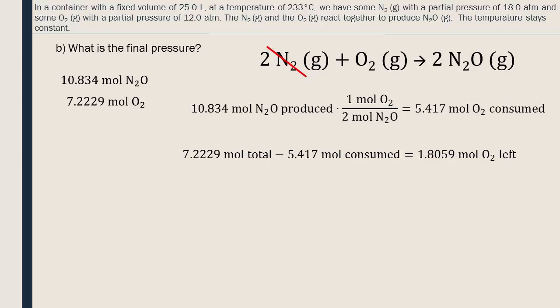So, the total quantity of moles that will exert a force on the walls of the container will be the 10.834 moles of N2O produced, plus the 1.8059 moles of oxygen in excess. In total, that gives 12.6399 moles of gas in the container after the reaction. Now, all that's left to calculate is the final pressure using the ideal gas equation with the mole value we just calculated.